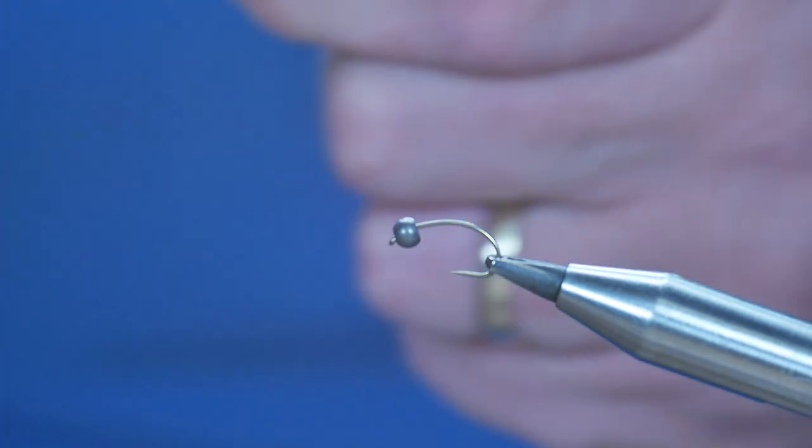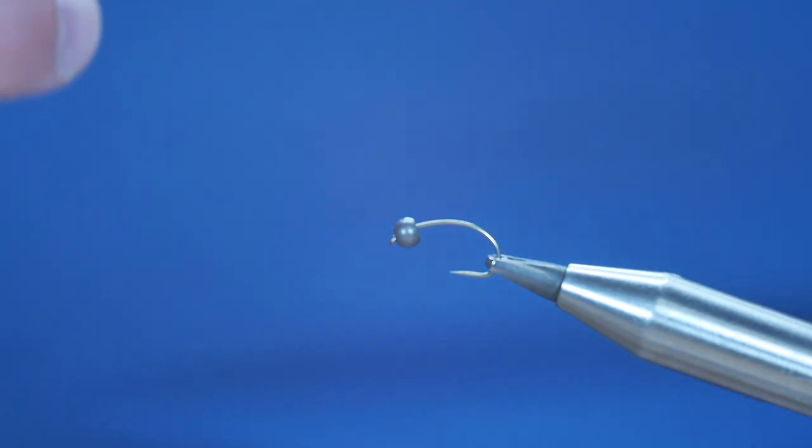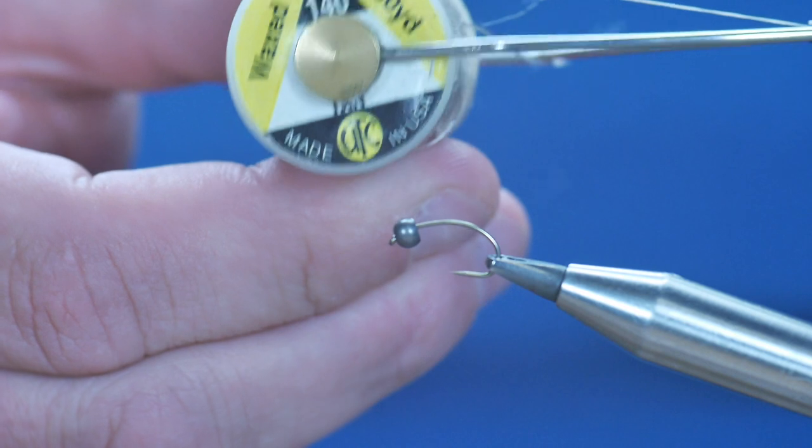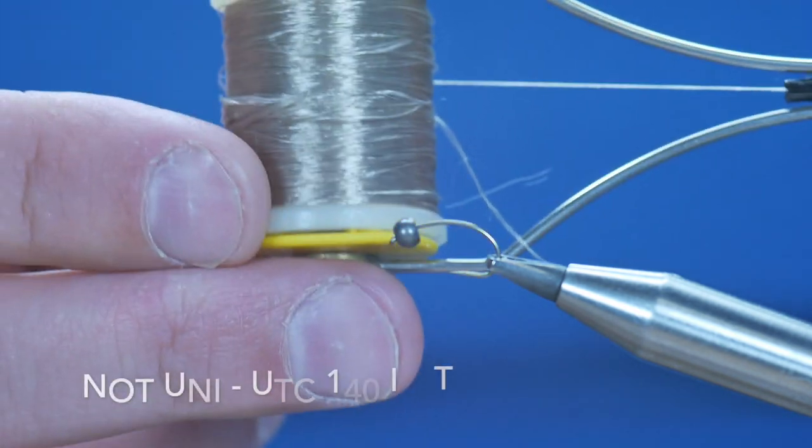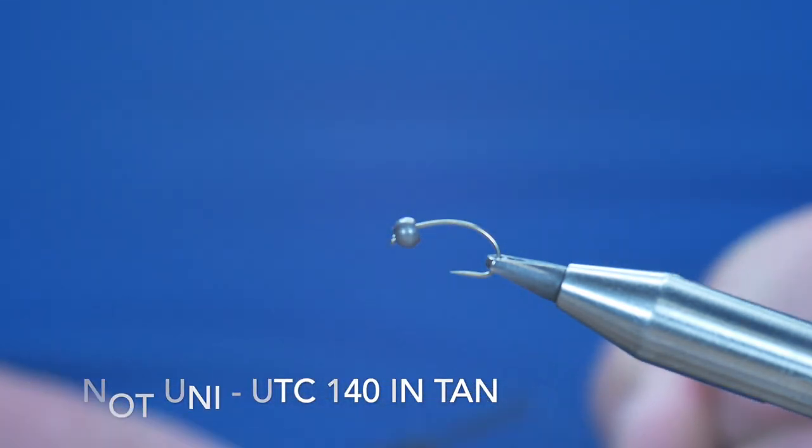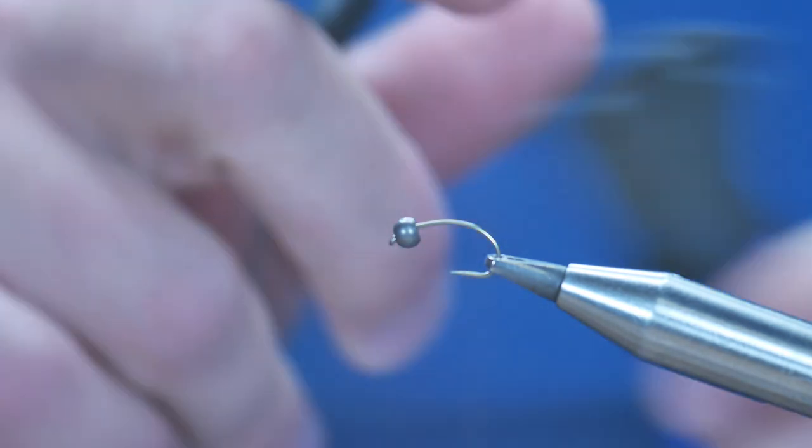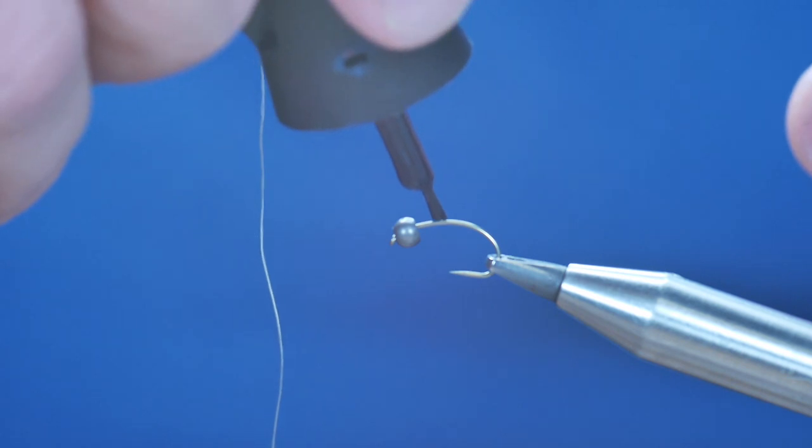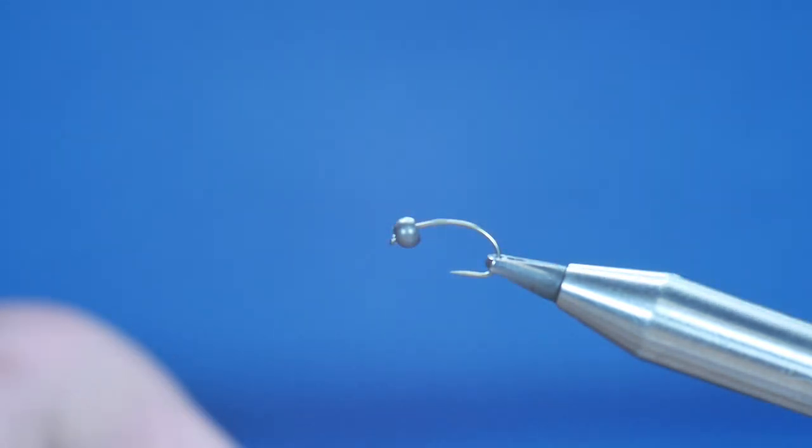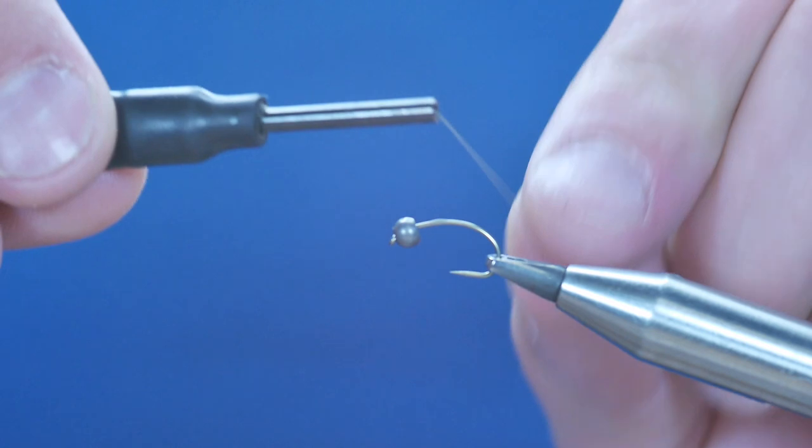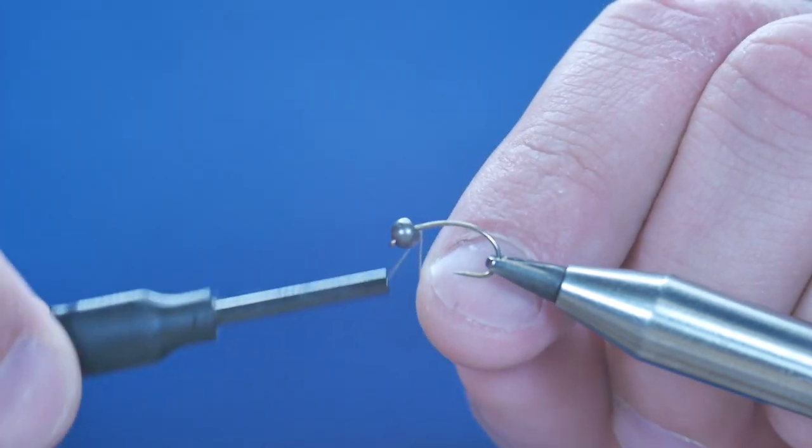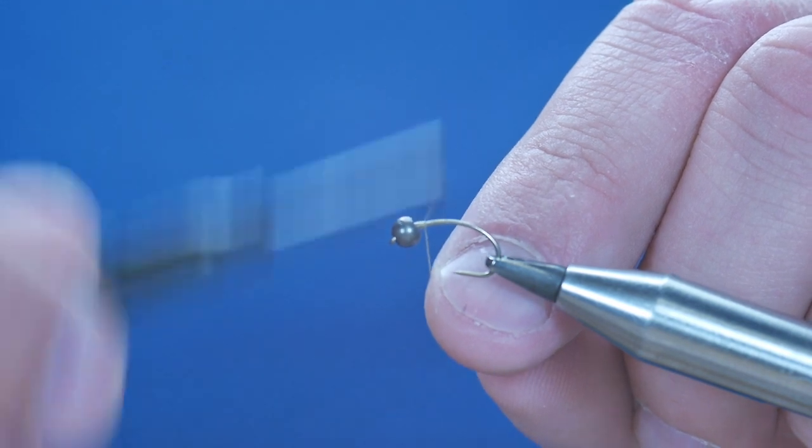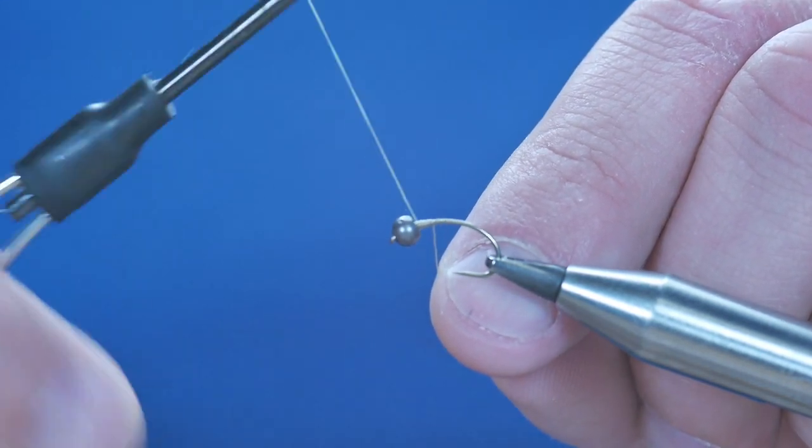The thread I'm going to be using to start off with is a uni thread, this is a 140, quite the thickest of the uni threads, and it's in a light tan. First thing I'm going to do then is add a tiny little bit of super glue to the shank and cast my thread on.